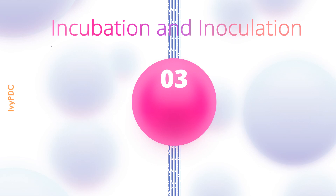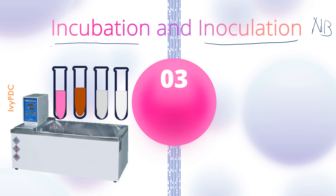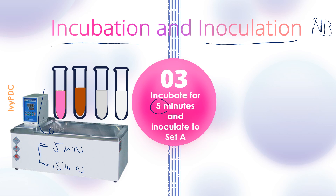The third step is to incubate the chemical tubes and inoculate them into the different nutrient broths. After adding the organism to the chemicals, incubate them using a water bath. When you place the test tubes inside the water bath, start two timers at the same time — one for five minutes and another for 15 minutes. When the first timer alarms at five minutes, inoculate from the chemical tubes into the nutrient broths labeled as Set A.